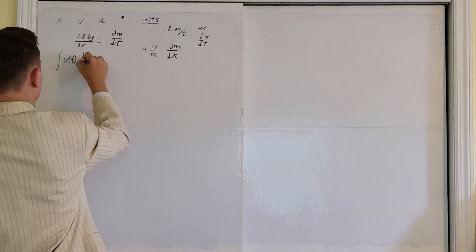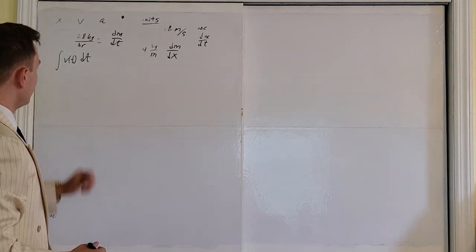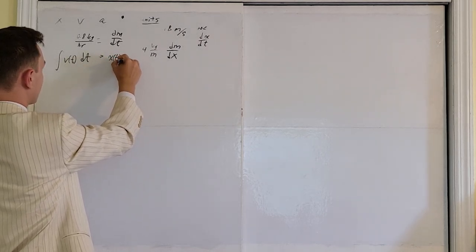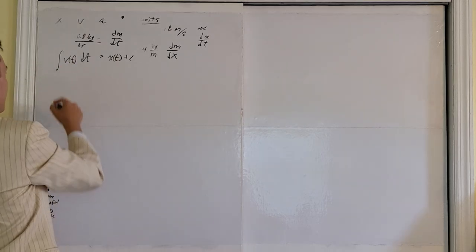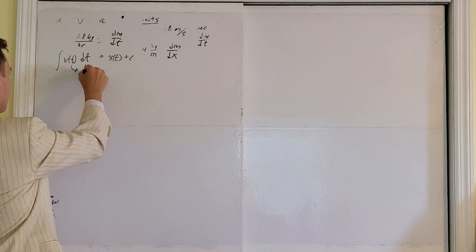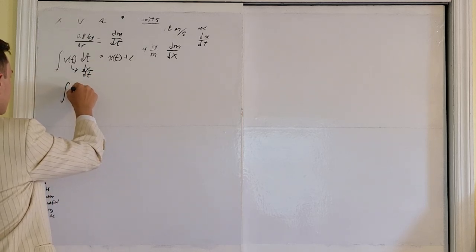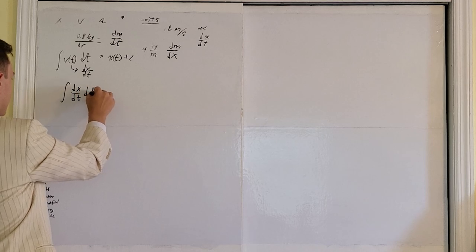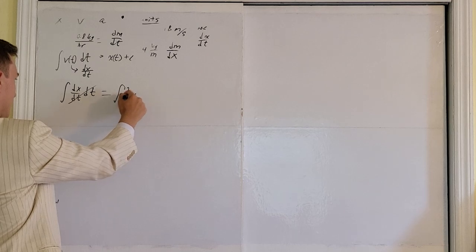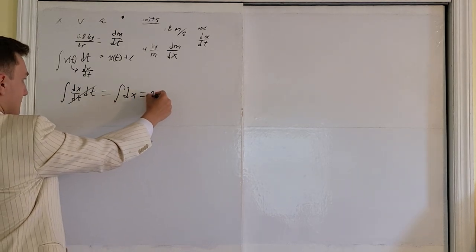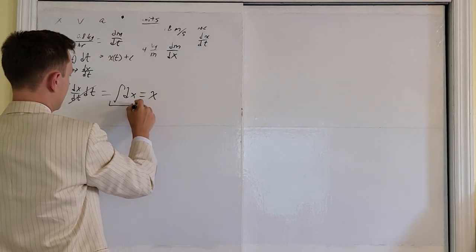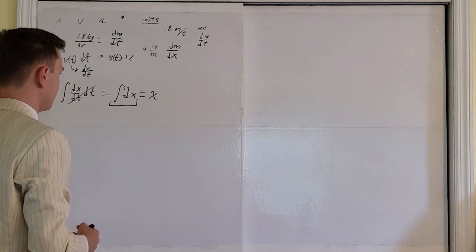The integral of velocity as a function of time with respect to time. We all know that this integral is going to evaluate to our position as a function of time plus some constant c. I can rewrite my velocity as a function of time as the derivative of position with respect to time. We know that. So this integral is also dx dt with respect to time. Our dt's can cancel out, and therefore this integral can be rewritten as the integral of dx, which is x. So I want us to understand that manipulation. Not uncommon for us to see integrals in this form, and we need to become familiar with them.